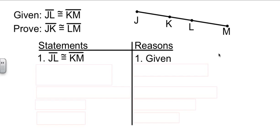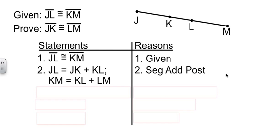What do we know about segment JL? Well, segment JL is going to be equal to JK plus KL. And similarly, segment KM is going to be equal to KL plus LM. How do we know that's true? That's the segment addition postulate again.